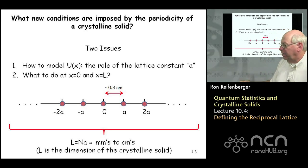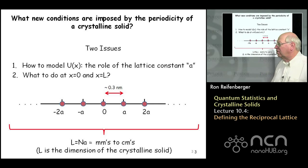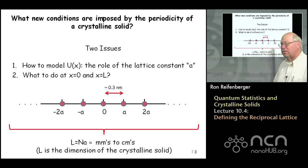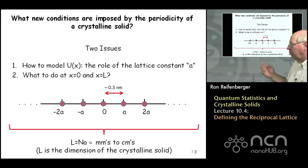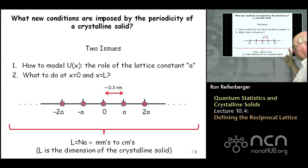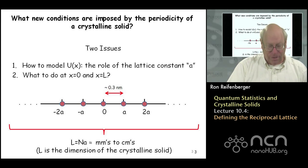There are two issues that must be addressed. The first is how to model the interaction potential energy that an electron sees as it moves through this one-dimensional lattice, exposing the role of the lattice constant a in U(x). The second issue is what to do with the ends of the crystal — how we handle the boundary conditions at x equals zero and x equals L.